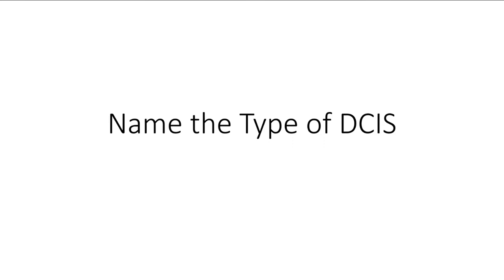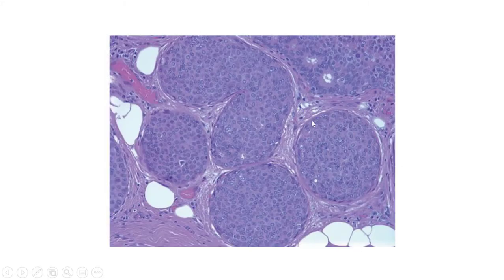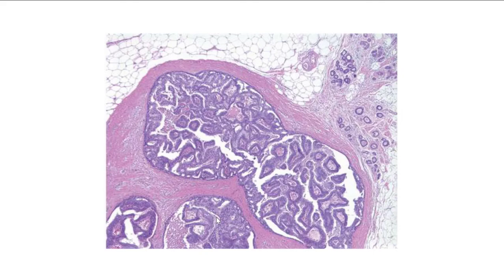Let's go through examples of DCIS subtypes. The cribriform type shows prominent cribriform architecture. The solid type is a uniform proliferation of atypical cells within the lumen lacking any cribriform architecture. The papillary type fills the lumen and, even at low magnification, you can make out fibrovascular cores. It has a rounded, non-infiltrative border with no desmoplasia.